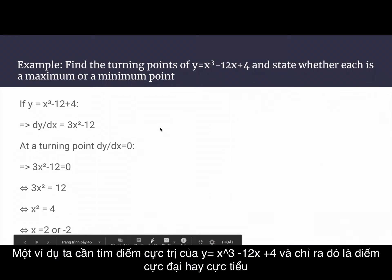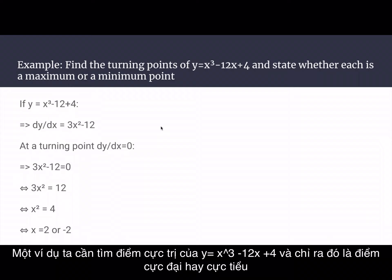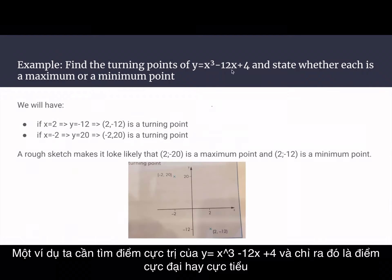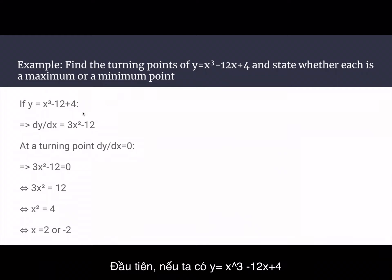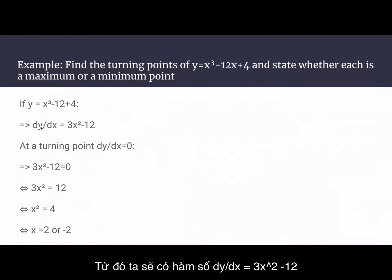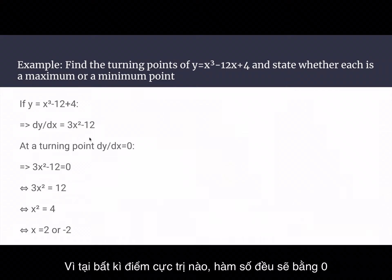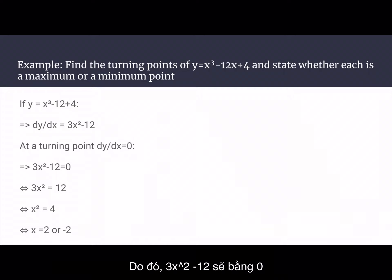For example, find the turning points of y equals x to the power 3 minus 12x plus 4, and state whether each is a maximum or a minimum point. If y equals x³ minus 12x plus 4, then dy/dx equals 3x² minus 12. At any turning point, dy/dx should equal zero, therefore 3x² minus 12 must equal zero.